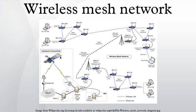Applications: mesh networks may involve either fixed or mobile devices. The solutions are as diverse as communication needs — for example, in difficult environments such as emergency situations, tunnels, oil rigs, battlefield surveillance, high-speed mobile video applications on board public transport, or real-time racing car telemetry. An important possible application for wireless mesh networks is VoIP. By using a quality of service scheme, the wireless mesh may support local telephone calls to be routed through the mesh.